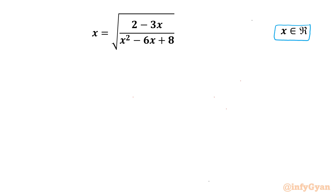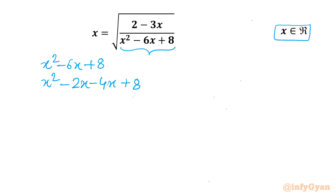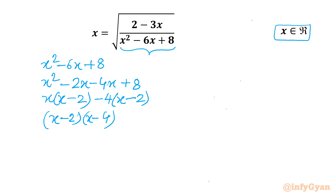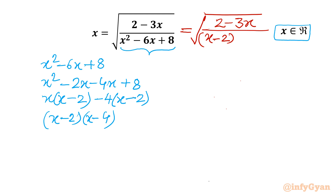I will begin by considering the given denominator: x squared minus 6x plus 8. Let's factorize — I will split minus 6x as minus 2x minus 4x. Taking x common from the first two terms gives (x minus 2), and taking minus 4 common from the last two terms gives the same bracket. So the factorization is (x minus 2)(x minus 4).